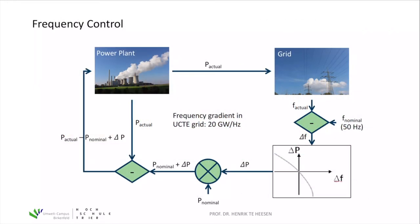One major service provided by energy utilities and grid operators is frequency control. Our AC grid has a nominal frequency of 50 Hz, and operators must set up their power plants' actual output to achieve this frequency. In case of any small deviation, the actual power must be adjusted to restore the nominal frequency. The power plant generates actual electric power fed into the grid, producing an actual frequency which is compared to the nominal 50 Hz.